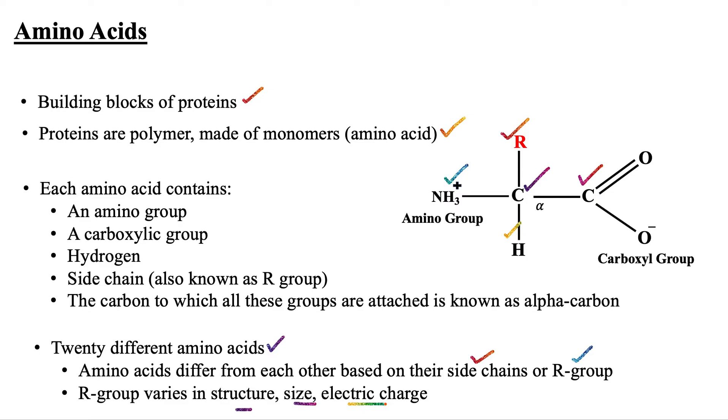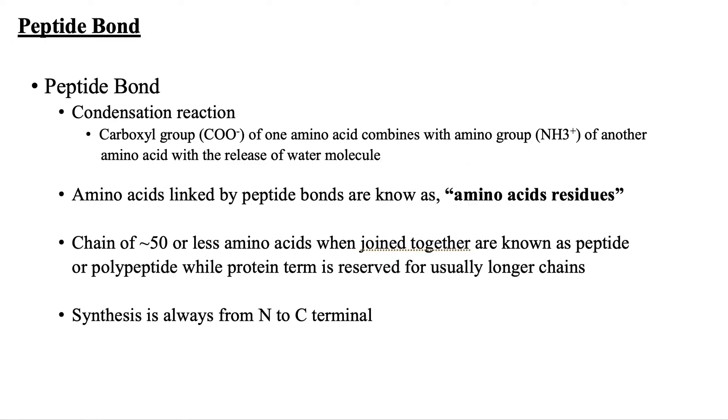A peptide bond is a type of covalent bond formed through a condensation reaction in which the carboxylic group (COO-) of one amino acid combines with the amino group (NH3+) of another amino acid with the release of a water molecule, ultimately resulting in the formation of a peptide bond.